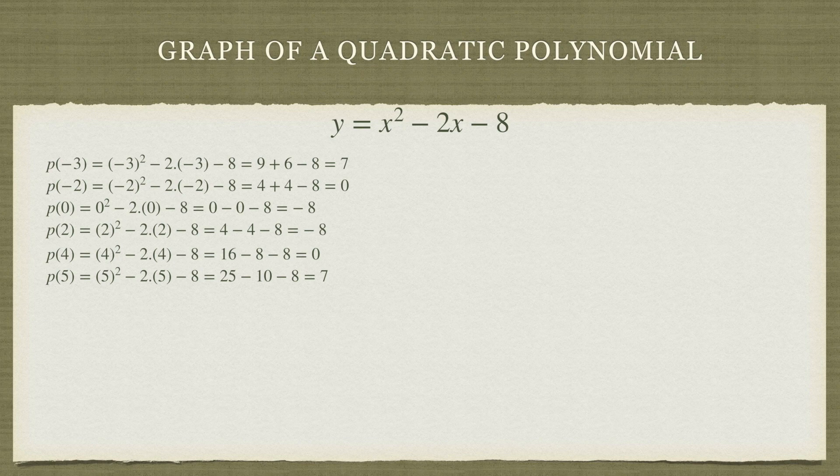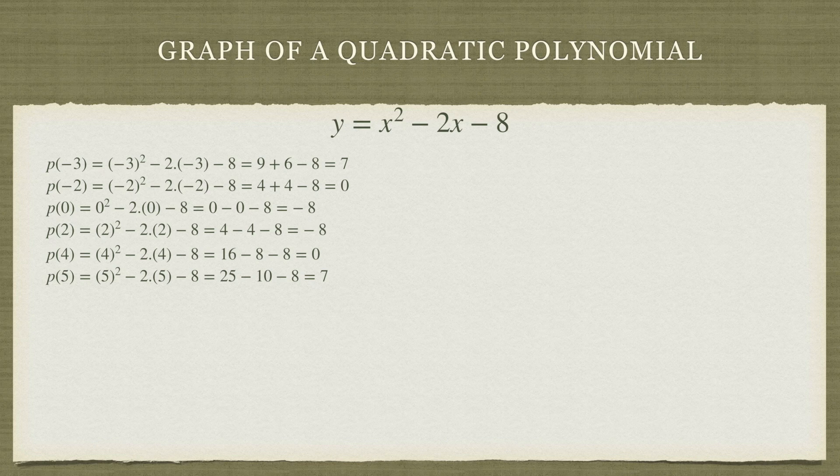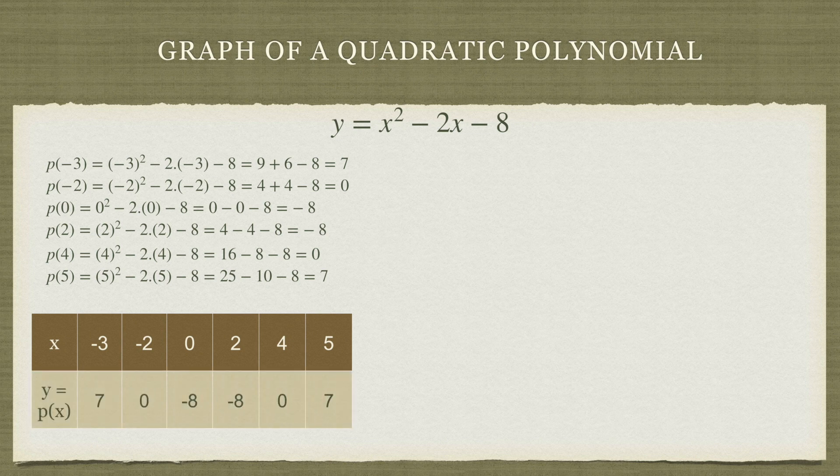These are some arbitrary values of x and for them we have found out the value of the polynomial. Let's put this information in the form of a table. These are our values of x which we have taken arbitrarily and now these are the values of the polynomial for each of those values of x.